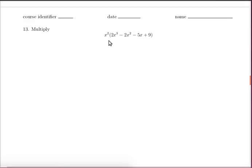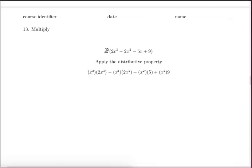Continuing our review, in this problem we're asked to multiply this monomial by this polynomial. That's just a matter of applying the distributive property. So the x squared will have to multiply each of the terms in the polynomial.